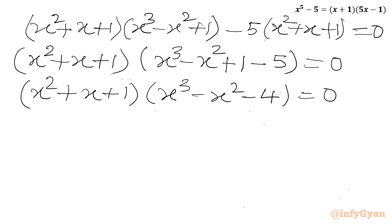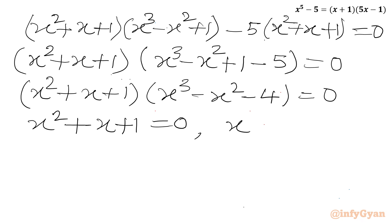From the product zero rule, we can write either x squared plus x plus 1 equals 0, or x cubed minus x squared minus 4 equals 0. Now we have to solve these two equations.